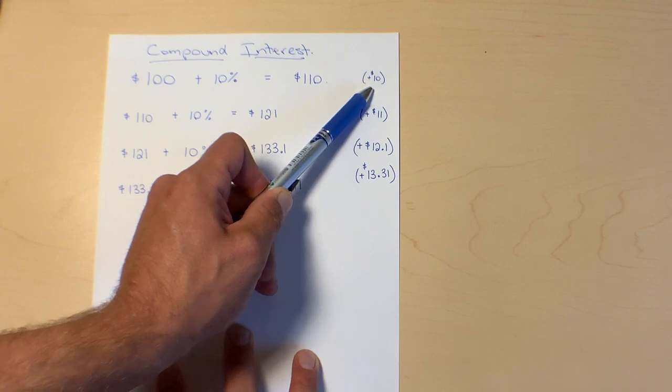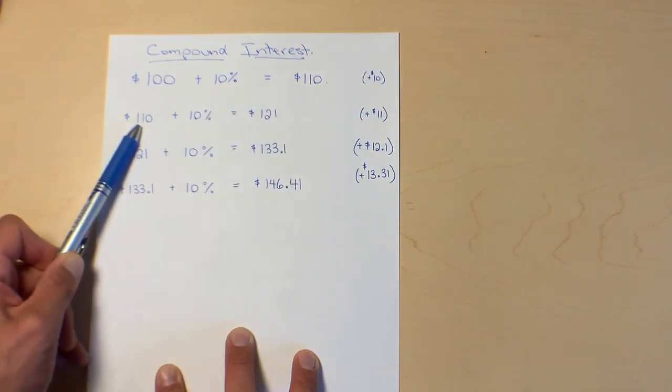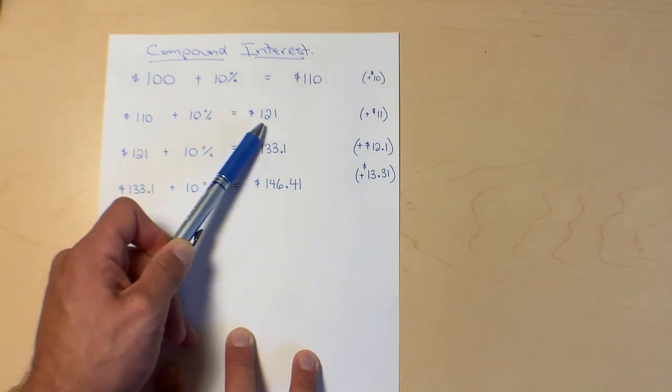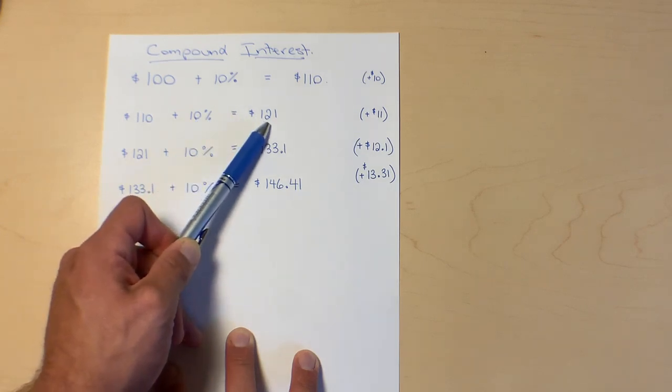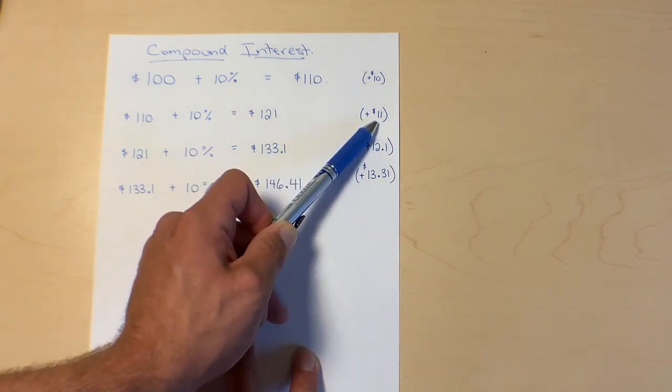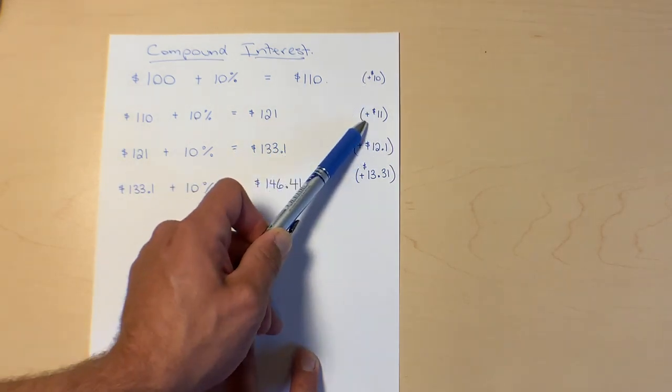When we start the next year now we're going to have $110 invested and let's say we earn 10% again. Now we're going to have $121. That's going to give us a gain of 11 dollars. So the first year we gain 10, the next year we gain 11.